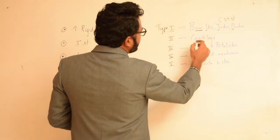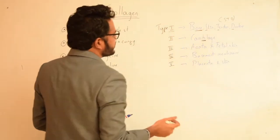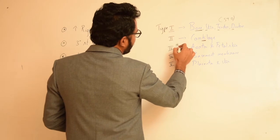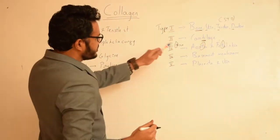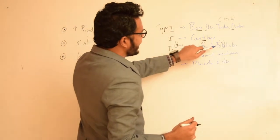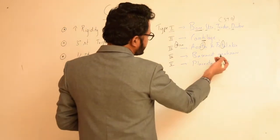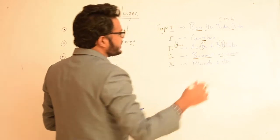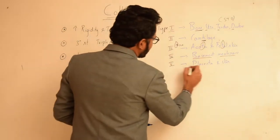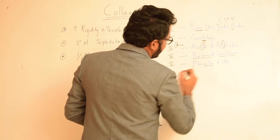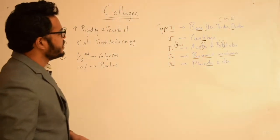For type 2, you can read the number 2 as resembling cartilage — type 2 collagen is found in cartilage. For type 3, write it as THREE: TE reminds you of aorta as well as fetal skin — type 3 is found in aorta and fetal skin. For type 4, read it as 'floor' — the basement membrane forms the floor of any epithelial lining, so type 4 is found in basement membrane. For type 5, think PENTA — type 5 collagen is found in placenta as well as skin.